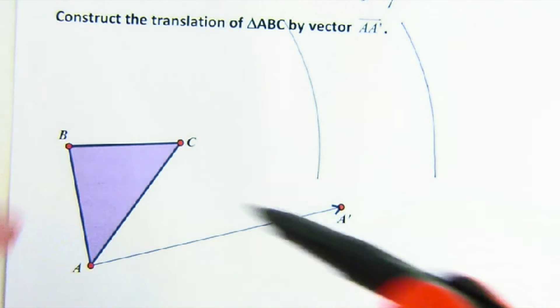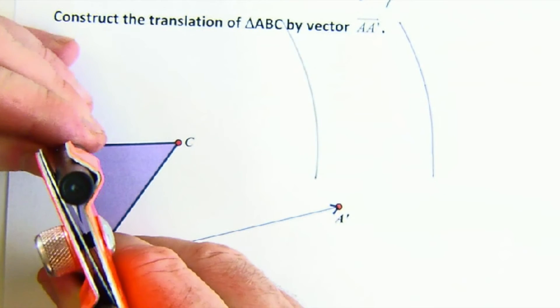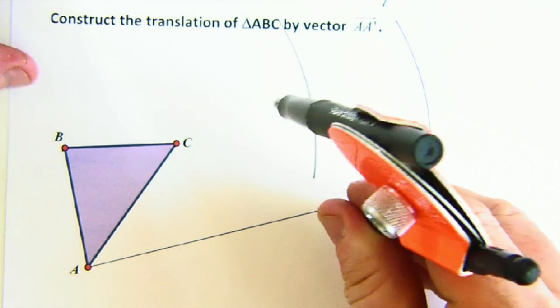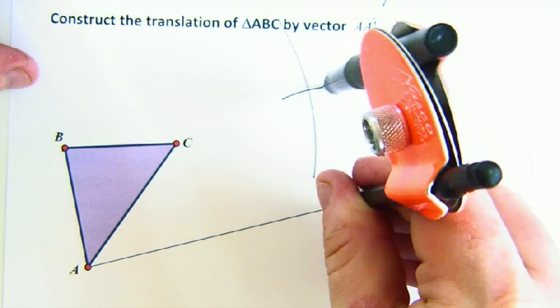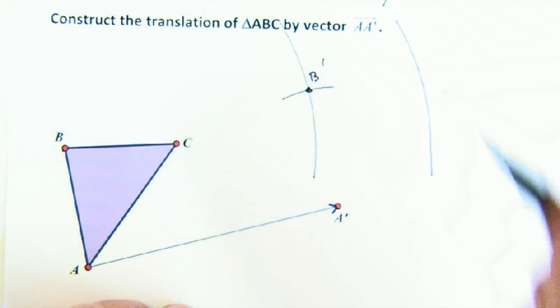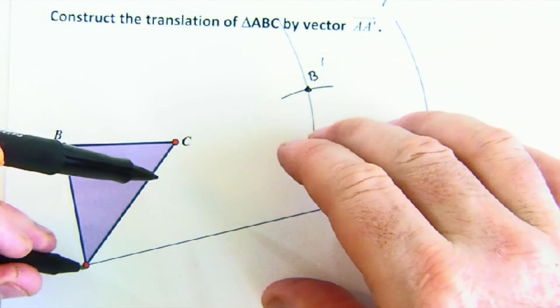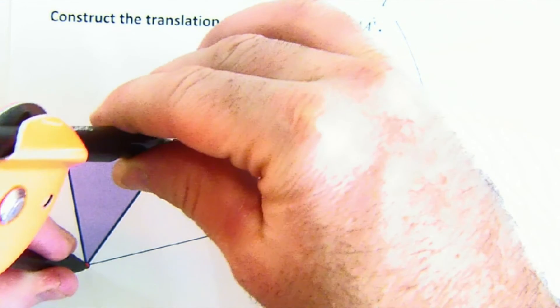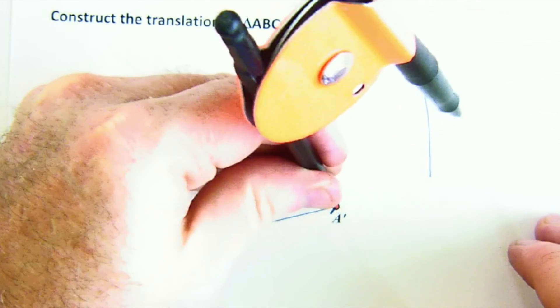And then I can reference everything from A'. So A to B, that distance has to be the same as A to B'. So I know where B' is. And then A to C. And A to C'.